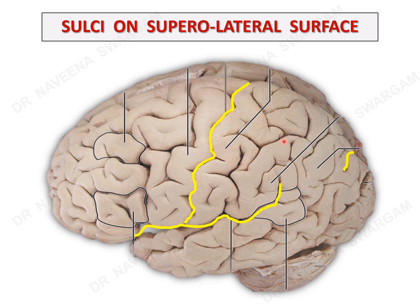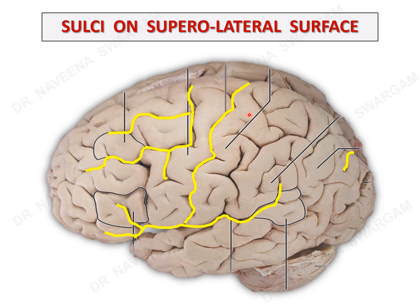Now let's see the other sulci on the superolateral surface, lobe by lobe. In the frontal lobe, in front of the central sulcus lies a vertically running pre-central sulcus parallel to the central sulcus. Perpendicular to it are two horizontally running sulci: the superior and inferior frontal sulci. The anterior horizontal and anterior ascending rami of the lateral sulcus project into the lower part of the frontal lobe. In the parietal lobe, behind the central sulcus lies a vertically running post-central sulcus parallel to the central sulcus, and the rest of the parietal lobe is divided by a horizontally running intraparietal sulcus.